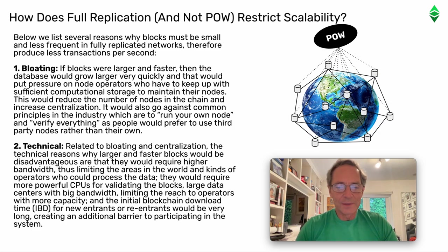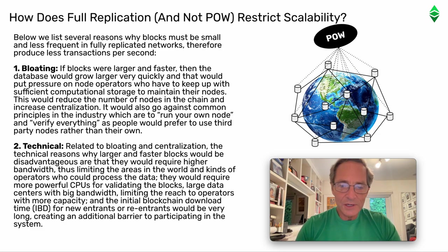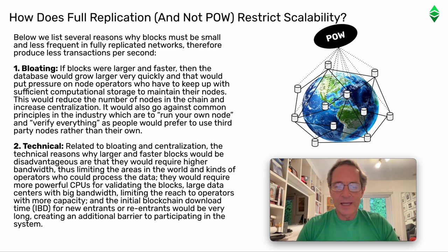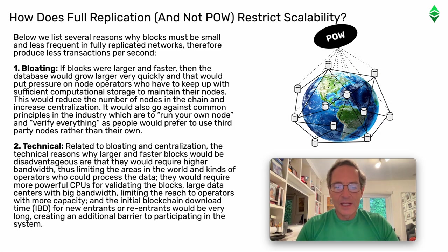2. Technical. Related to bloating and centralization, the technical reasons why larger and faster blocks would be disadvantageous are that they would require higher bandwidth, thus limiting the areas in the world and kinds of operators who could process the data. They would require more powerful CPUs for validating the blocks, large data centers with big bandwidth, limiting the reach to operators with more capacity. And the initial blockchain download time IBD for new entrants or re-entrants would be very long, creating an additional barrier to participating in the system.